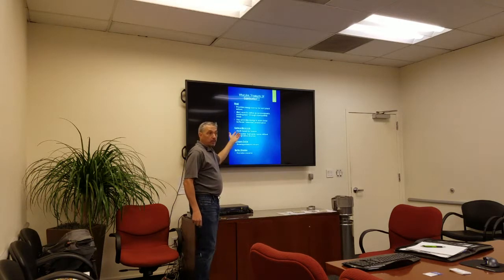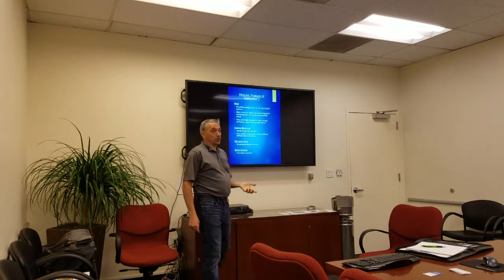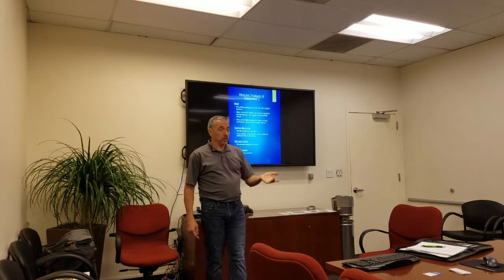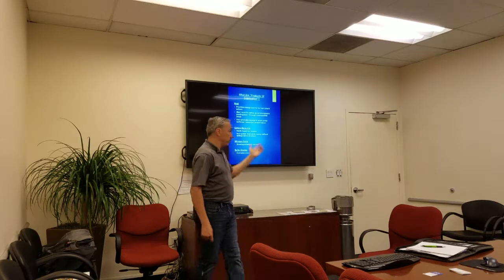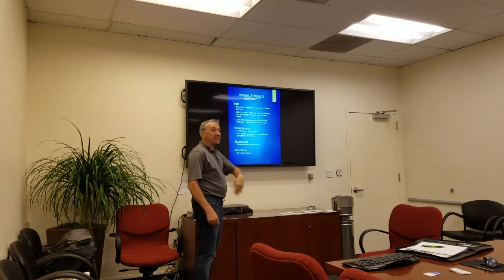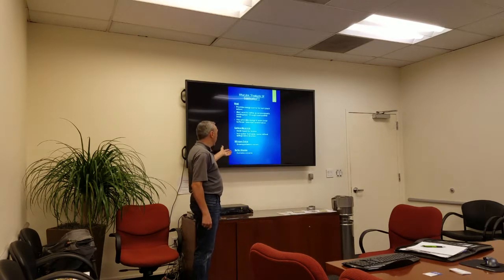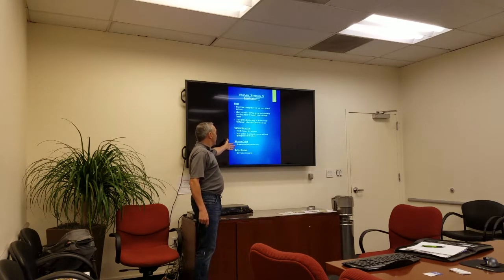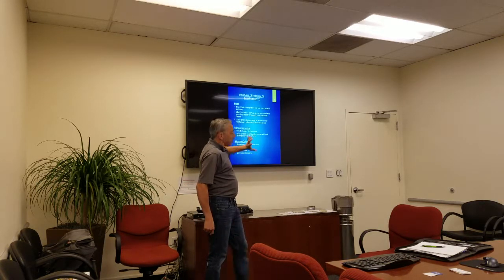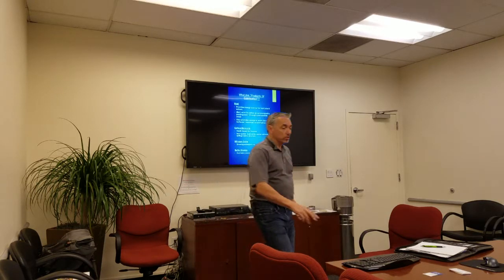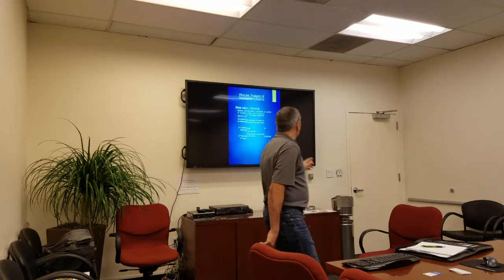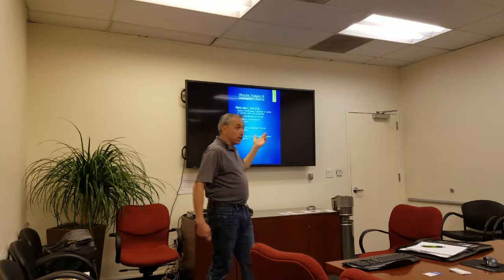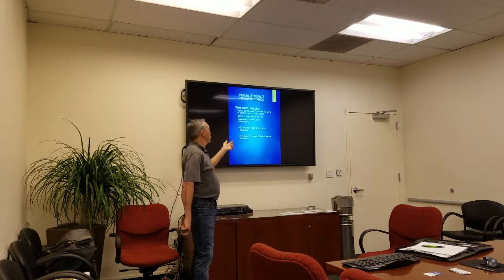Carbon monoxide is a product of combustion and it's colorless and odorless and it kills people. It displaces the oxygen and that's how we can suffocate. We have nitrogen oxide, or NOx, and sulfur dioxide. These are products of combustion. The useful one is heat. The other ones are not so useful but we still have to deal with them.